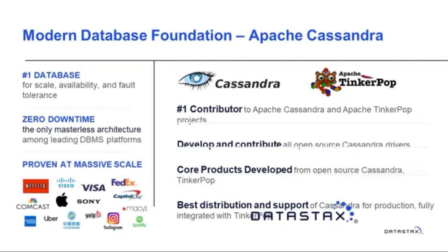In today's world, you need to manage your data on infrastructure that is purpose-built for data portability — able to scale across on-prem, hybrid, multi-cloud, and even inter-cloud deployments for those using multiple cloud providers. Cassandra does this in a unique way, empowering you to build and run modern applications that scale across different environments, data centers, and clouds.